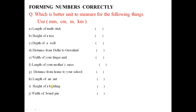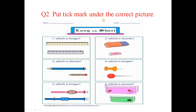Length of an ant — millimeter. Height of a building — meter. Width of a book — centimeter, or millimeter. You have to write these yourself. Next, put a tick mark under the correct picture: which is longer, which is shorter. You have to put a tick mark against the correct answer.